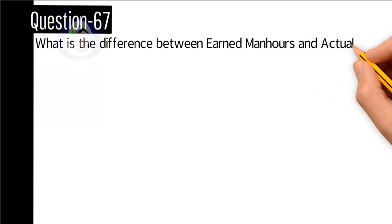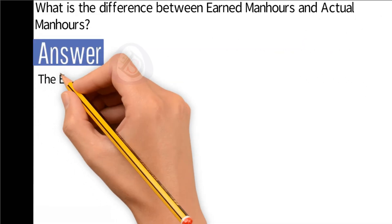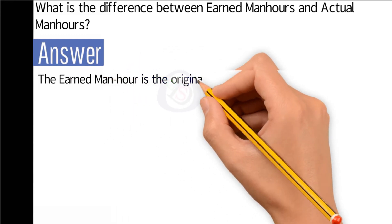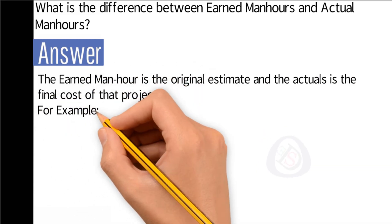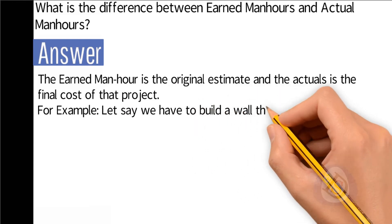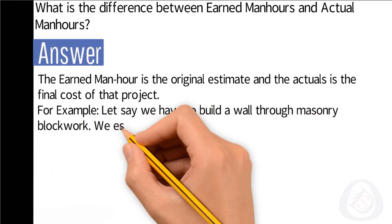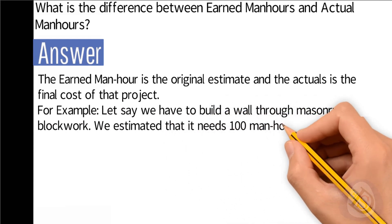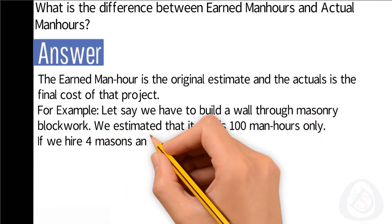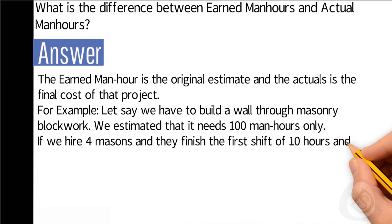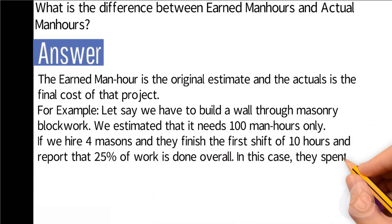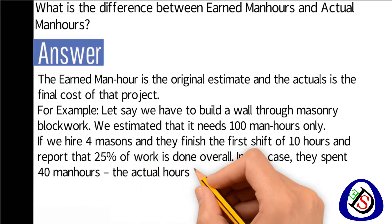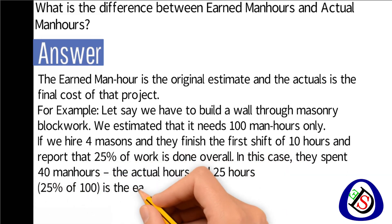Question number 67: What is the difference between earned man-hours and actual man-hours? Answer: The earned man-hour is based on the original estimate and the actual is the final cost of that project. For example, if we need to build a wall through masonry blockwork and estimated 100 man-hours — if we hire four masons and they finish one 10-hour shift reporting 25% of work done, they spent 40 actual man-hours, and 25 man-hours (25% of 100) are the earned man-hours.